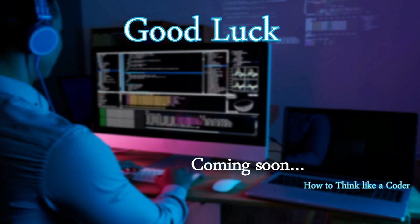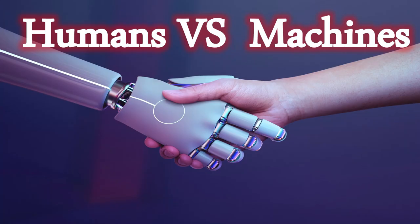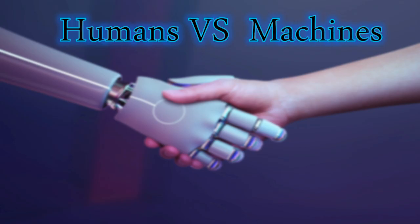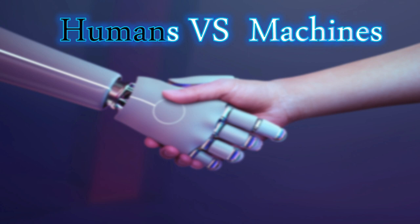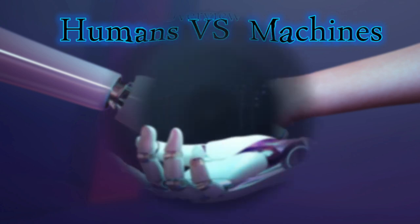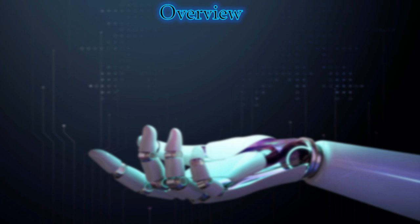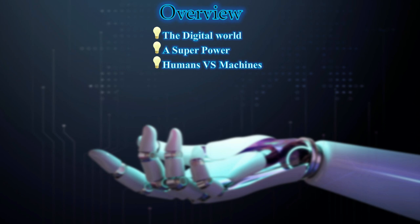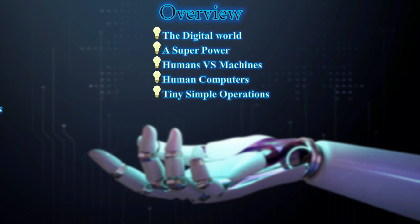In this video we're going to talk about the difference between human beings and machines and compare them together. The overview of this video covers: the digital world and what is a superpower, humans versus machines, human computers, tiny simple operations, electronic computers, and automation.